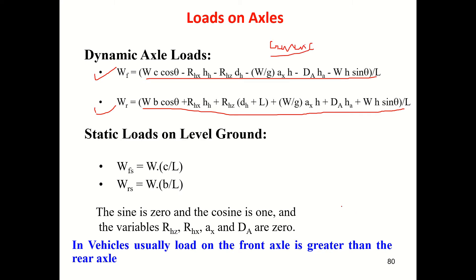Let us apply these equations under specific conditions to develop simplified expressions. First, let us find the static load acting on each axle when the vehicle is resting on level ground. Level ground means θ = 0, and static condition means ax = 0.